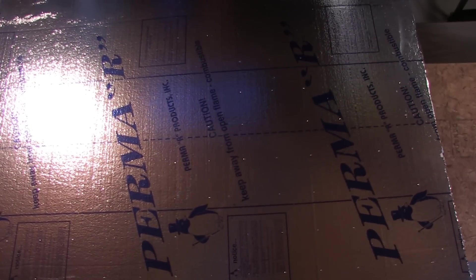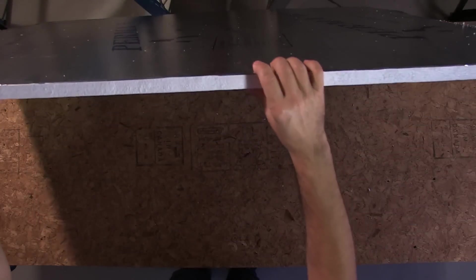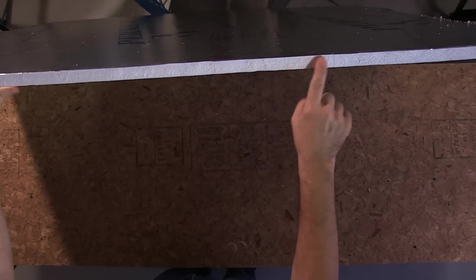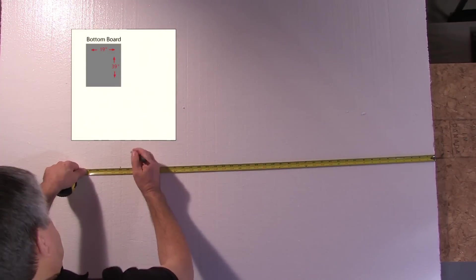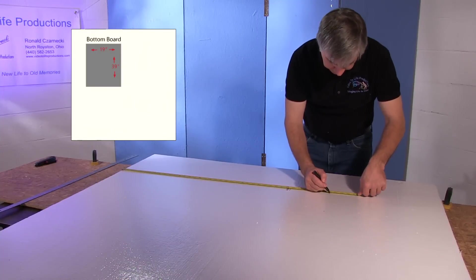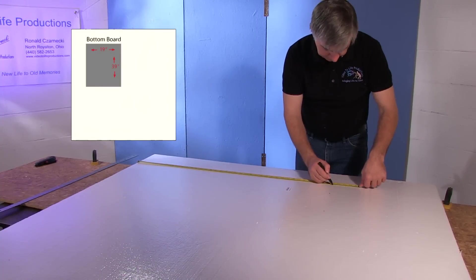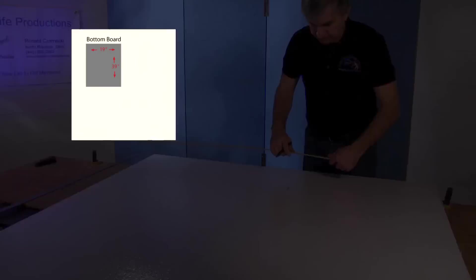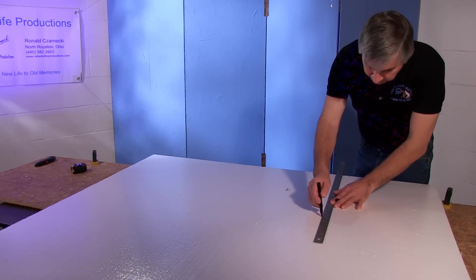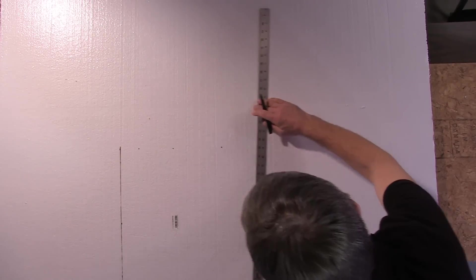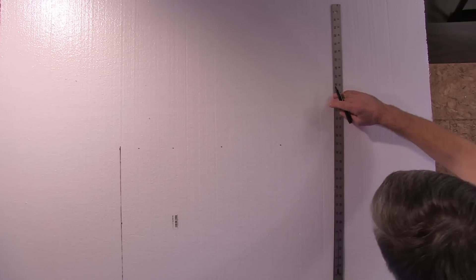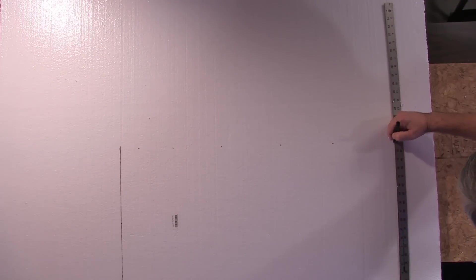This is the board you're going to be using. You want to grab the edge that's the smoothest, so that'll be the brand new edge. I'm going to measure out 39 inches. Our finished product is going to be 40 inches by 20 inches, allowing a half inch for each side. This measurement is going to be 19 inches, allowing a half inch for each side, for a total width of 20 inches.